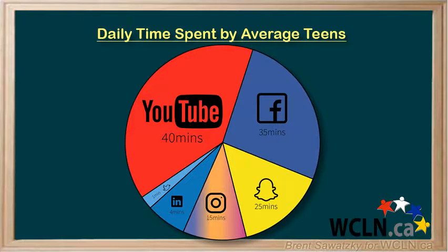So a pie chart does a great job of giving us a snapshot of a situation at a particular time. At the time when this data was collected, our graph shows that students' online activity was broken down in this way. But it doesn't tell us the trends behind the breakdown. What if someone said they think that Facebook is losing ground as compared to Snapchat, and that the composition of this graph will be totally different next year?